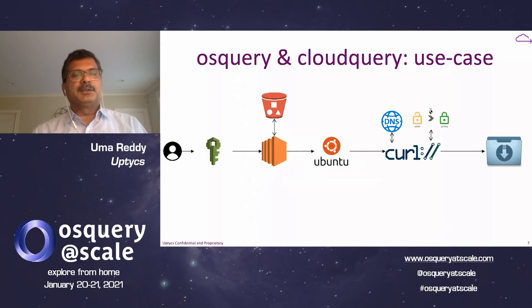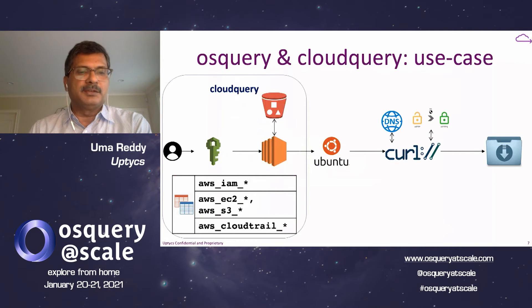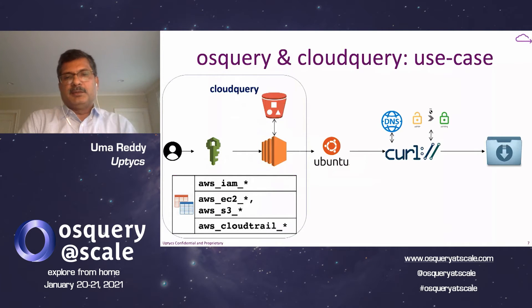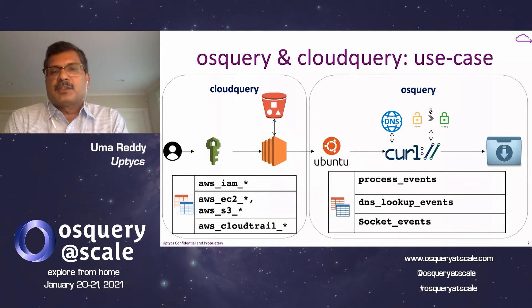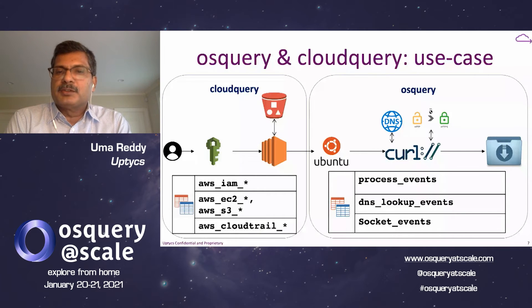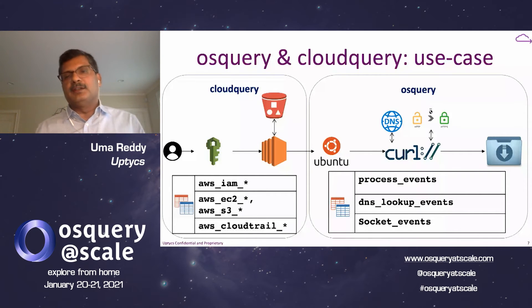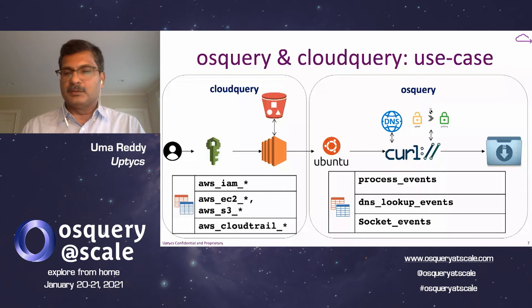In our case, Cloud Query data arrives in OS Query in the form of tables: IAM information, EC2 information, S3 information, and CloudTrail information. On the endpoint, we're collecting process events, DNS lookup events, and socket events. When the user tries to curl the file out, the DNS lookup is done and we know if the DNS is going to a malicious website. The process events capture the curl command and all its command line options. This makes it really easy to track the flow of a bad actor all the way from the cloud into the virtual machine.